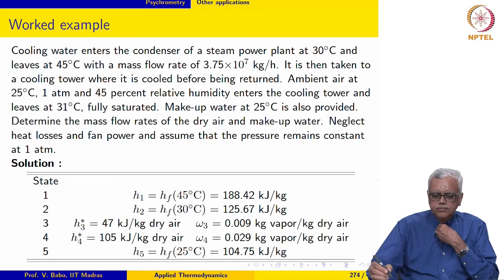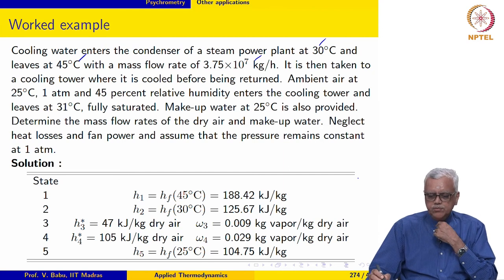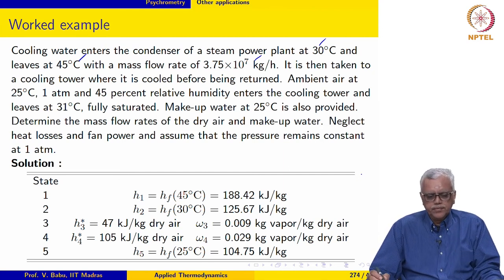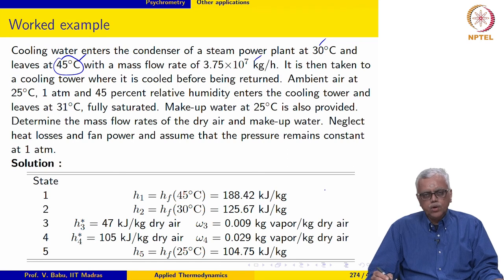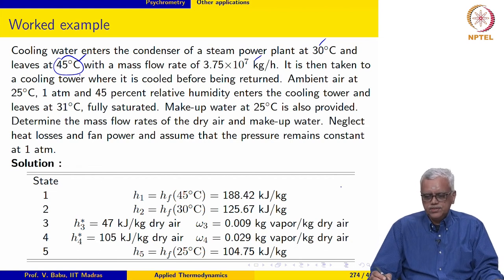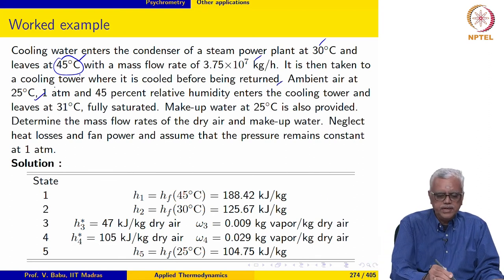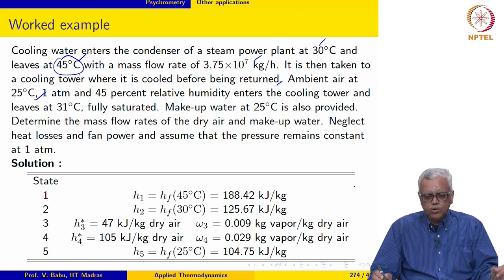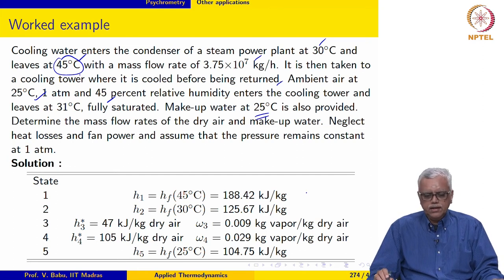Let us look at an example. Cooling water enters the condenser of a steam plant at 30 degrees Celsius and leaves at 45 degrees Celsius with a mass flow rate of 3.75 times 10 to the 7 kg per hour. Ambient air at 25 degrees Celsius and 45 percent relative humidity enters the cooling tower and leaves at 31 degrees Celsius fully saturated. Makeup water at 25 degrees Celsius is also provided. Determine the mass flow rates of dry air and makeup water.